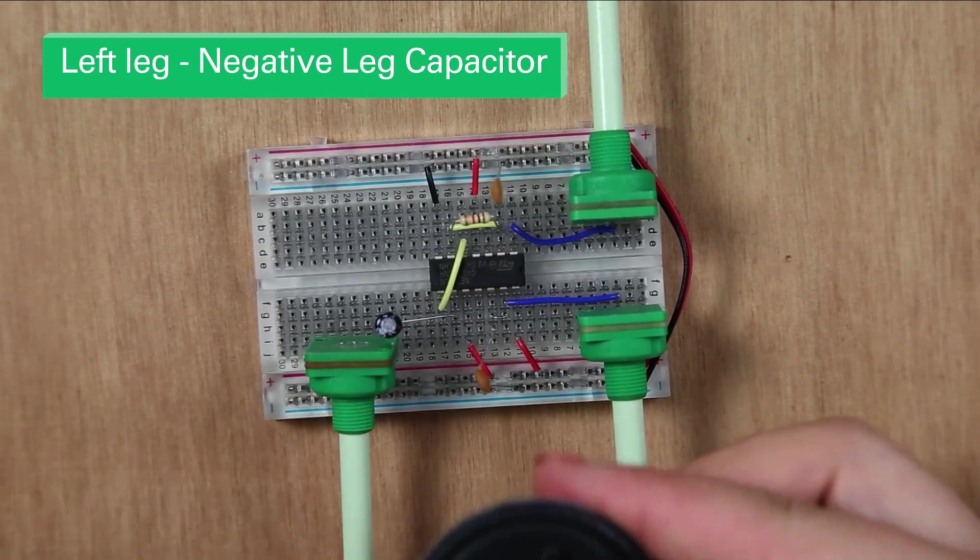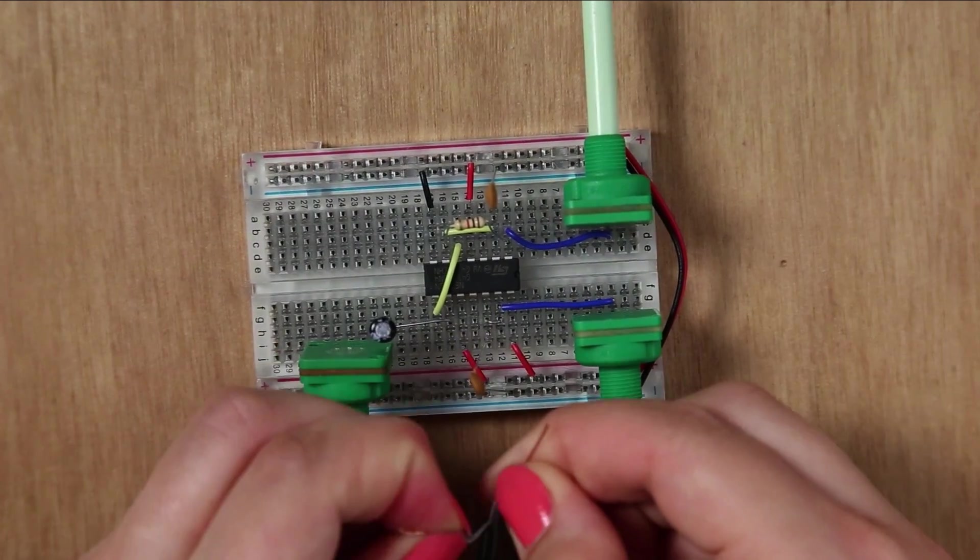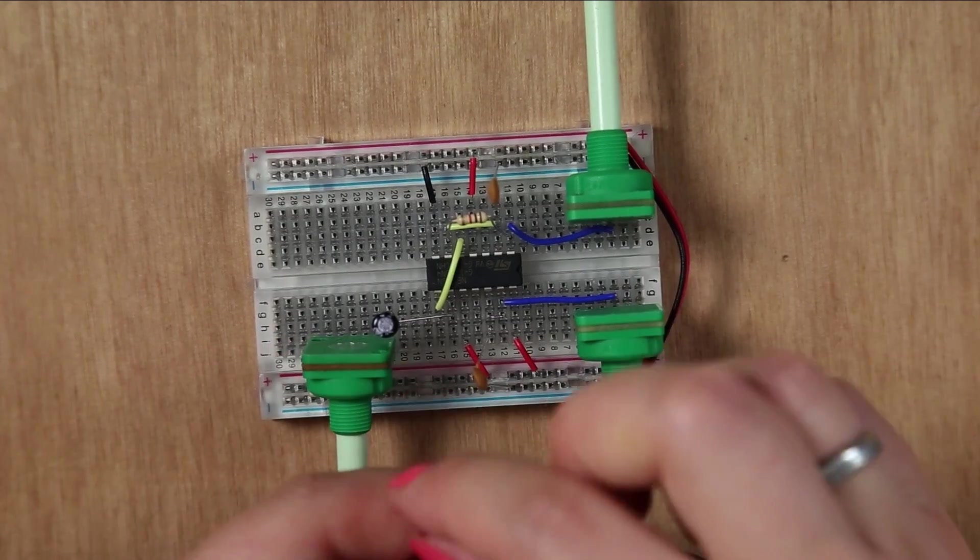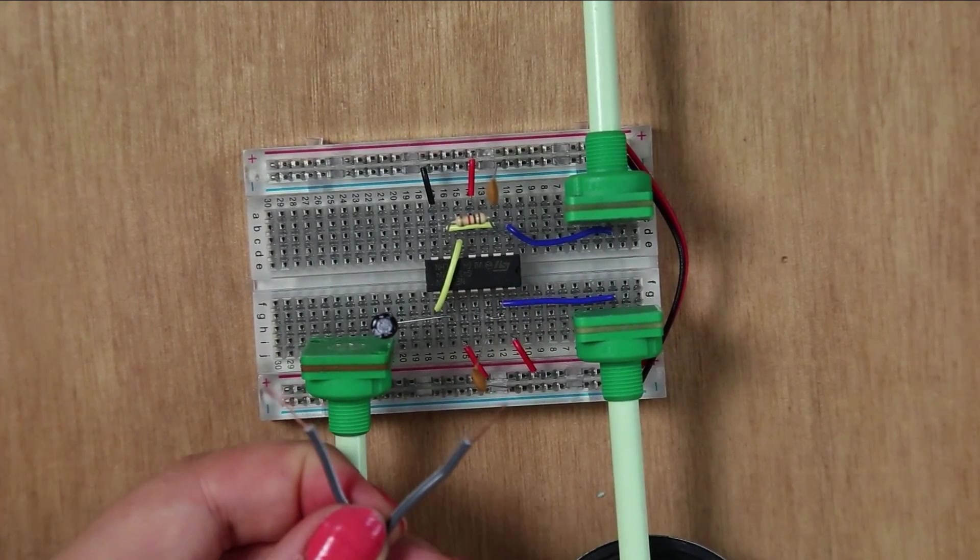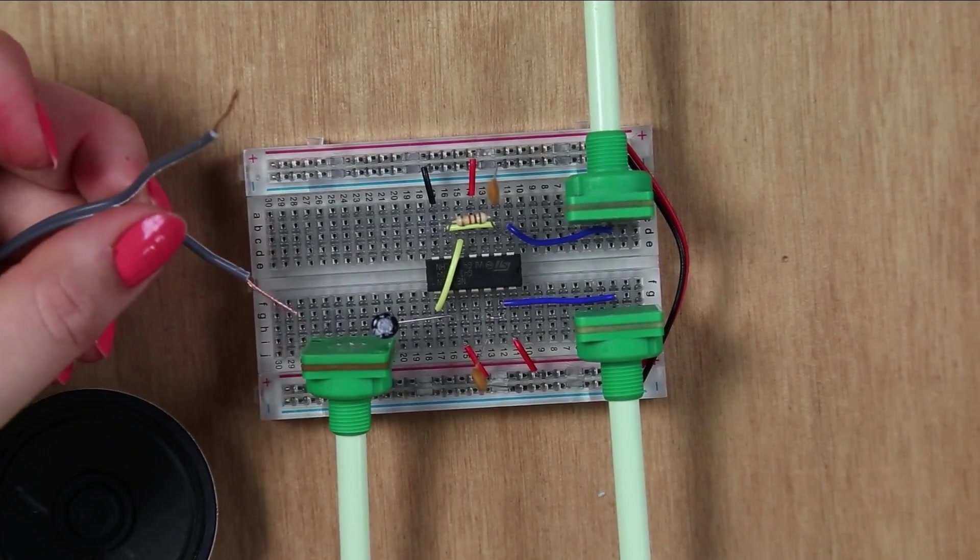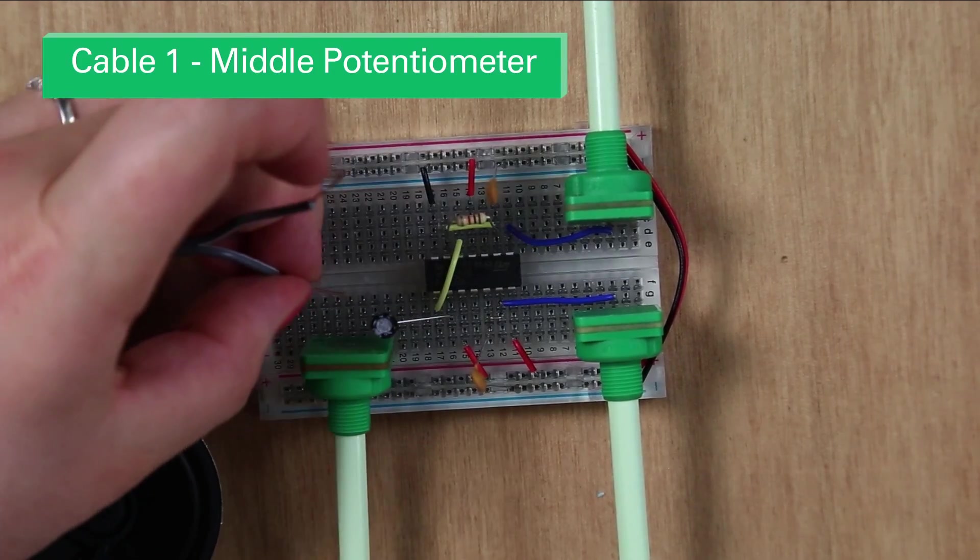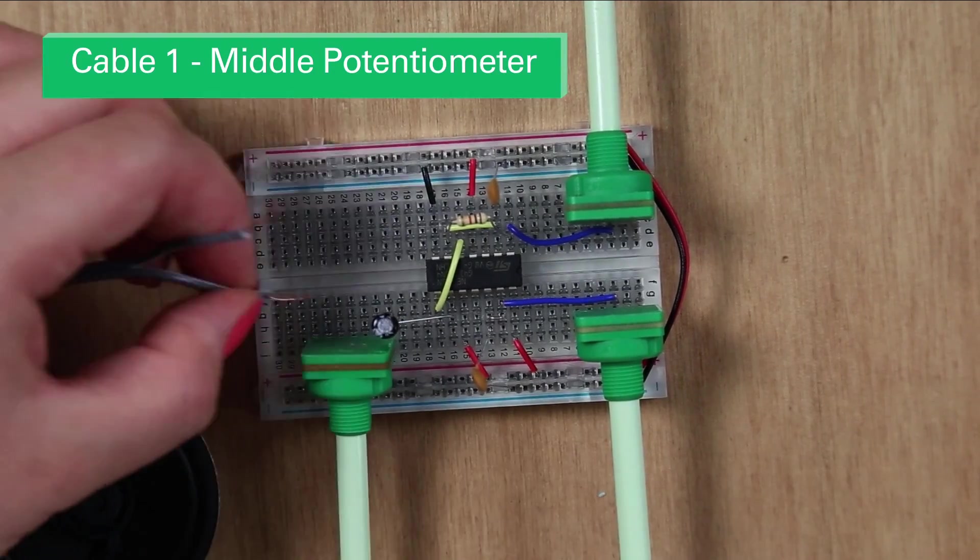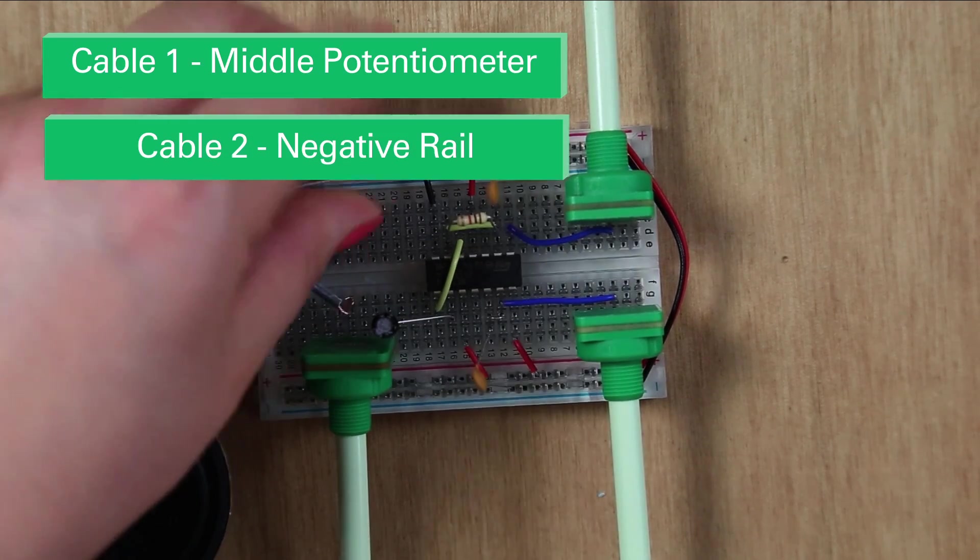So second to last is your speaker. And this has 2 little wires here. So the next bit we want to do is plug this into the board. So these two copper wires. One of them wants to go in to the middle of the potentiometer, the volume potentiometer, which is here. And one needs to go into the negative, which is there.